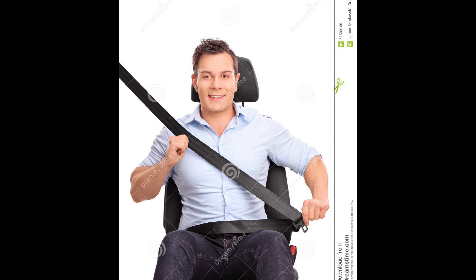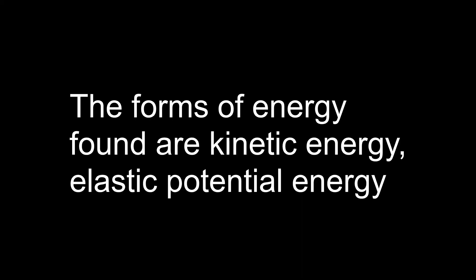The momentum found in a seatbelt is the person lurching forward and then going in the opposite direction from the seatbelt's brake activating. The impulse is found when the seatbelt is holding the person from moving and then sends them back. The types of energy that are found are the kinetic energy of the person sent forward, the elastic potential and kinetic energy of the seatbelt holding and then reversing direction of the person, and the kinetic energy of the person after being affected by the seatbelt.